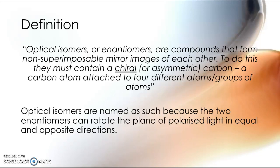All parts of that statement are important when it comes to defining what makes an optical isomer. And optical isomers are named because the two different enantiomers are able to rotate a plane of polarized light in equal and opposite directions. And I'll show you what I mean by that in a moment.